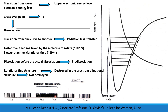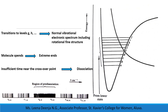The continuum that occurs due to predissociation is shown here. On the other hand, transitions into levels G, H, I, etc. will give rise to a normal vibrational electronic spectrum including rotational fine structure once more.